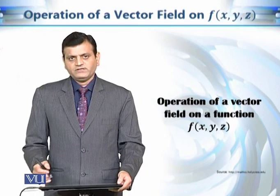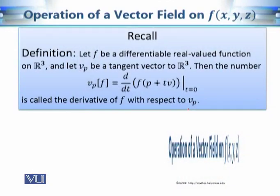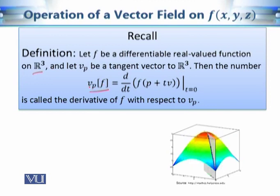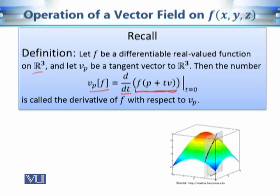This operation is known as the operation of a vector field on a function. Let us first recall how we defined the directional derivative. If we have a function f from R³ to R, we define the directional derivative of f at point p in the direction of v by restricting f to a line through p. The image of this line is a curve, which is a function of one variable, so we can compute an ordinary derivative and then set t equal to zero to get the derivative at point p.